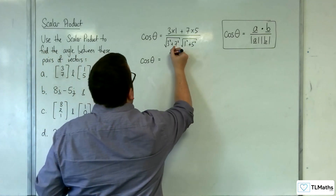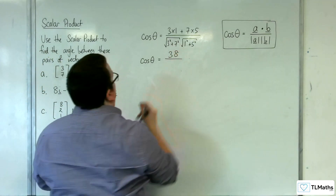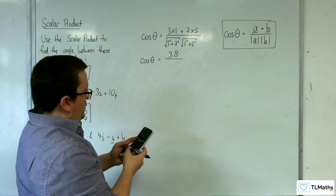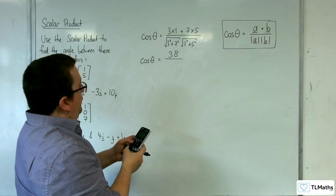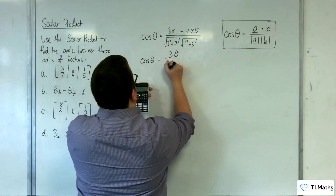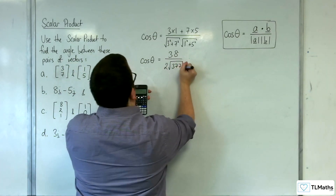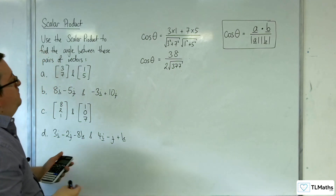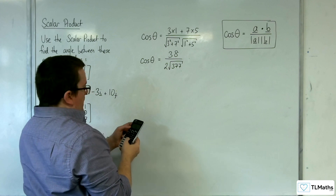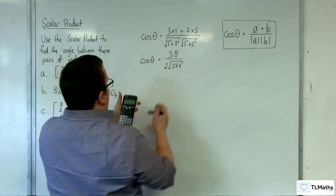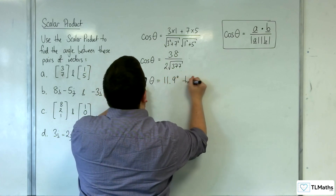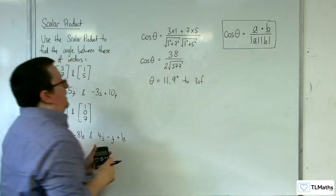We've got 38 in the numerator — that's 3 plus 35. Then we've got the square root of 9 plus 49, times the square root of 1 plus 25, which gives us 2 root 37 in the denominator. So 38 divided by that, and then inverse cosine of that. We should get that the angle is 11.9 degrees to three significant figures.